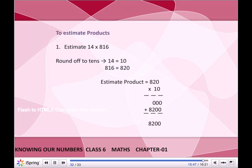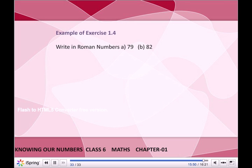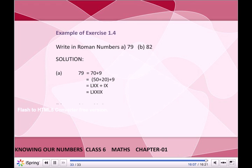Write in Roman numerals: 79 and 82. Solution: A. 79 = 70 + 9 = 50 + 20 + 9 = LXX + IX = LXXIX. B. 82 = 80 + 2 = 50 + 30 + 2 = L + XXX + II = LXXXII. Thank you.